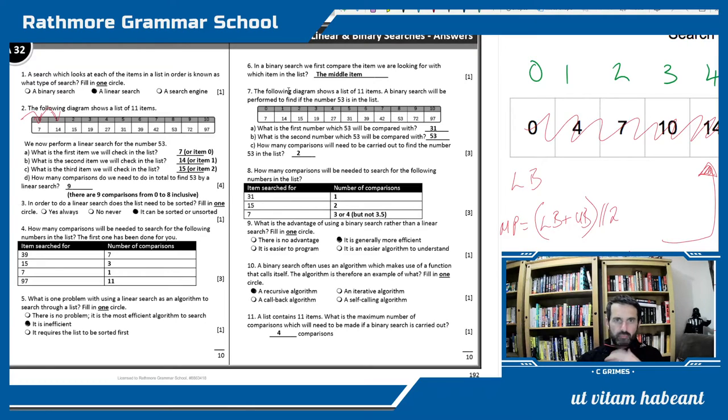So remember, the binary search, we first compare the item we are looking for with the midpoint or the middle item. What is the first number? 7a. What is the first number which 53 will be compared with? Now if you look at how we're doing this, well our lower bound is 0, our upper bound is 10. 10 plus 0 floor divided by 2 is going to give me 5. I'm going to probe into element 5 and you can see the answer is 31.